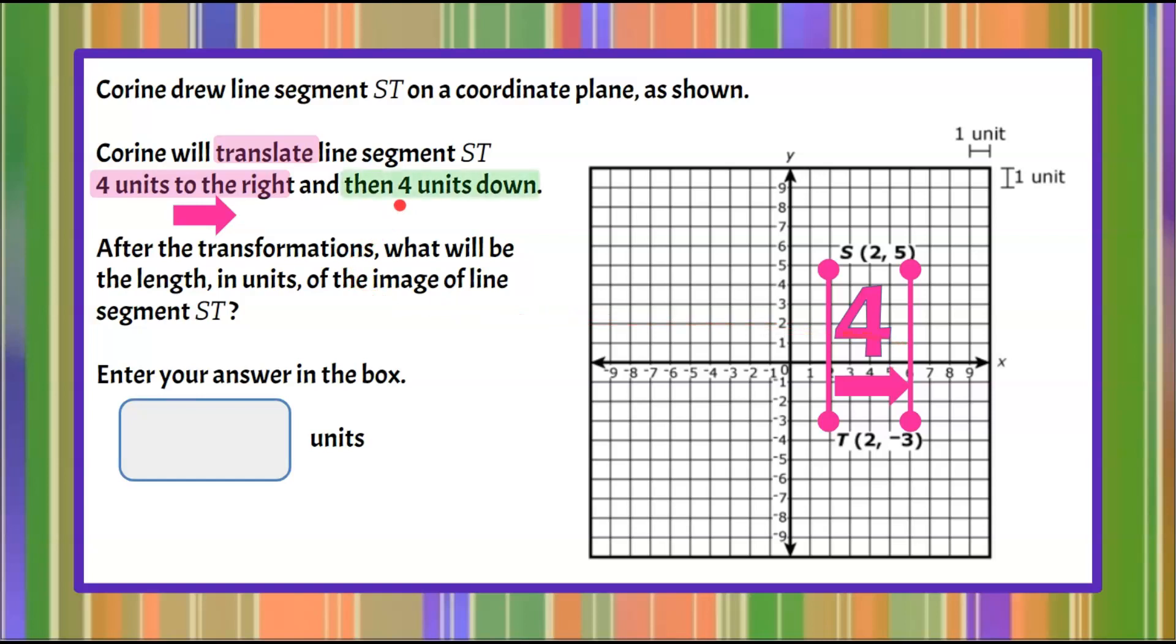Now the next translation is four units down. So we're going to take all points on this line segment and we're going to go four units down: one, two, three, four. And draw our line segment and we can see that this endpoint one, two, three, four.